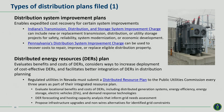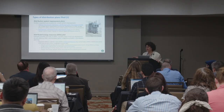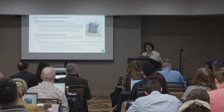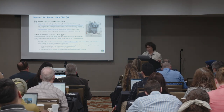The second type of plan is a distributed energy resources plan. For example, in Nevada, regulated utilities submit a plan that evaluates the benefits and costs of distributed resources and considers ways to increase their cost-effective deployment and better integrate them into the distribution planning process. The distributed resource plan includes DER forecasting and hosting capacity analysis to inform the utility's grid needs assessment. The plan is submitted every three years along with the utility's integrated resource plan.